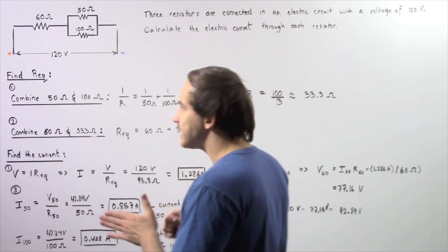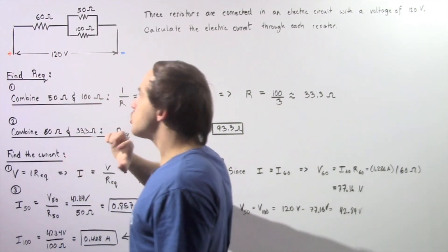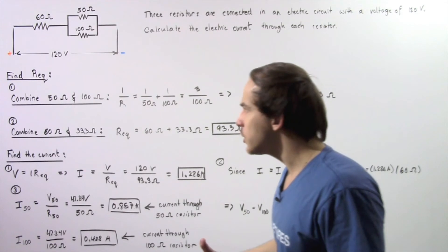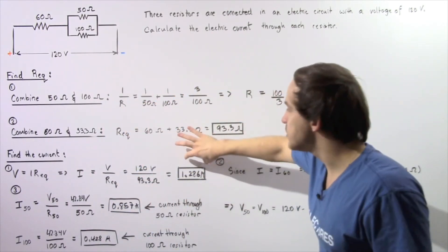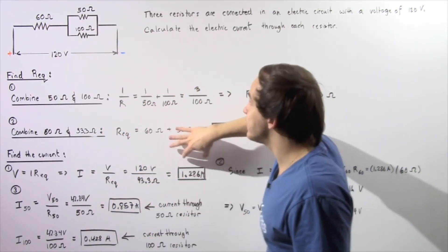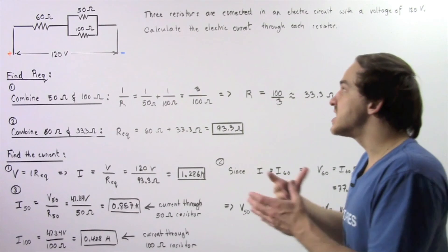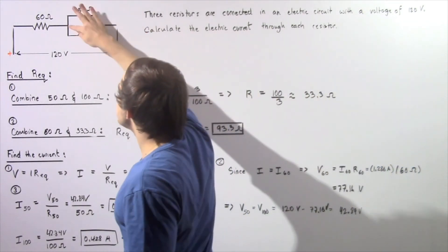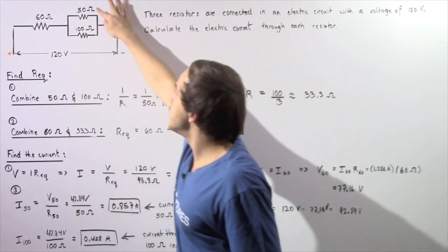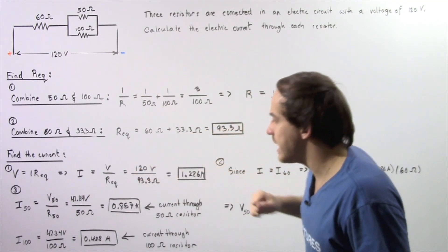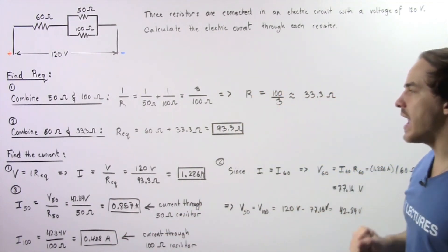The electric current begins at the positive end of our battery and flows through the circuit, so the total electric current equals the current through the 60 ohm resistor. When this current reaches the intersection, it splits into two parts: some flows through the upper resistor and the rest through the lower resistor. So the 50 ohm resistor carries 0.857 amps and the 100 ohm resistor carries 0.428 amps.